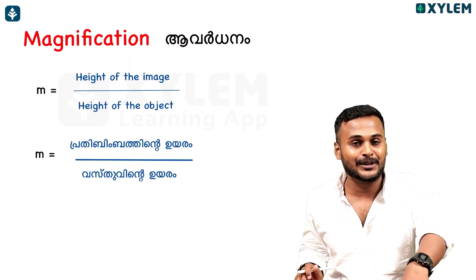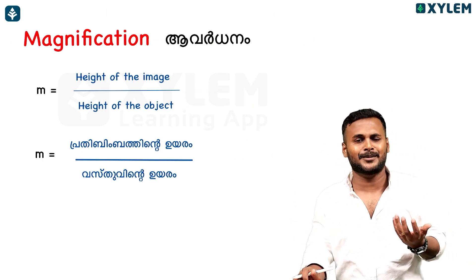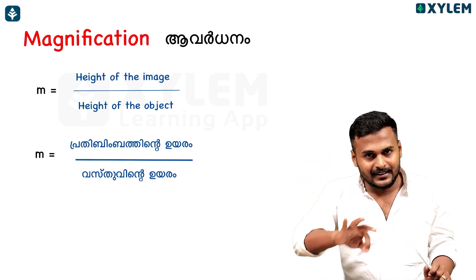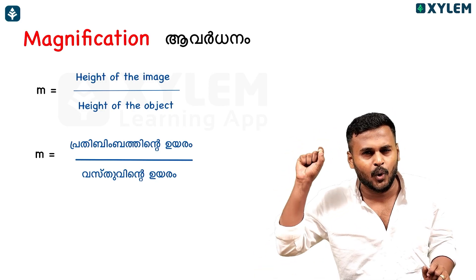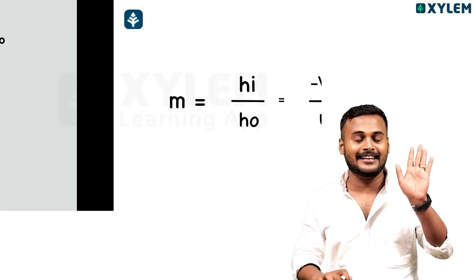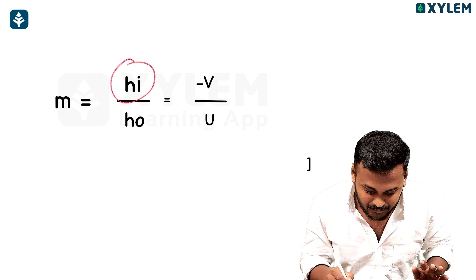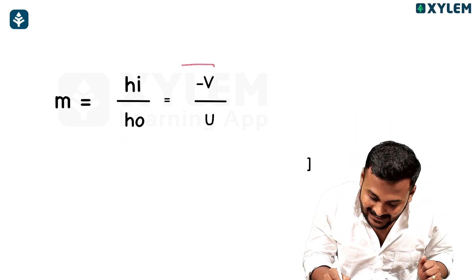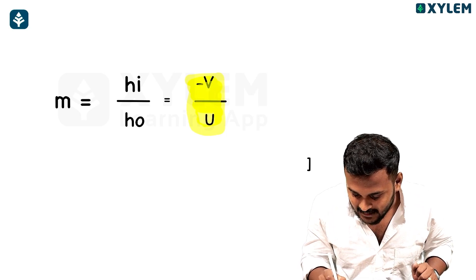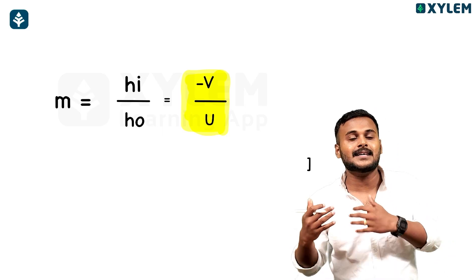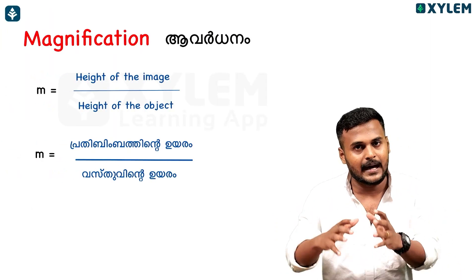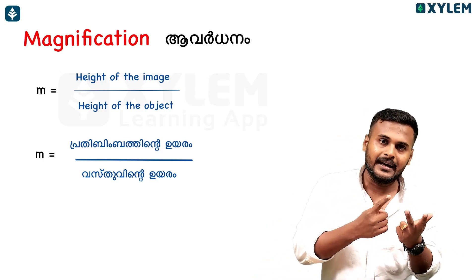The major formula is the magnification formula. Magnification means height of the image divided by height of the object. So M equals hi by h-naught, which also equals minus V by U. M equals minus V by U is very important.